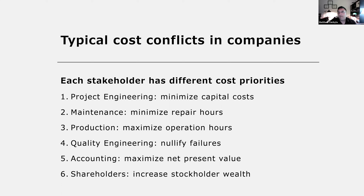A lot of times we have cost conflicts in companies. Within an organization, various stakeholders have different cost priorities. For example, the project engineering team tries to minimize capital costs, the maintenance team minimizes repair hours, the production team maximizes operation hours, quality engineering nullifies failures, accounting maximizes net present value, and shareholders look to increase stockholder wealth. A successful product must balance all of these priorities.